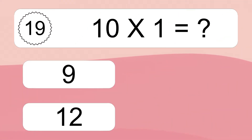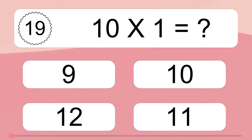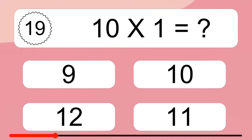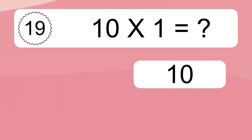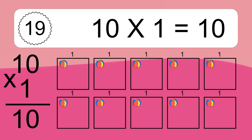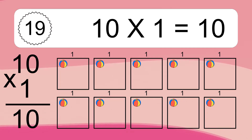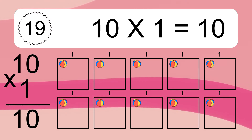Ten times one equals what? Ten times one equals ten. We have ten boxes and each box has one colorful ball inside. If you count all the balls in all the boxes together, you will have ten times one balls. This equals ten balls.